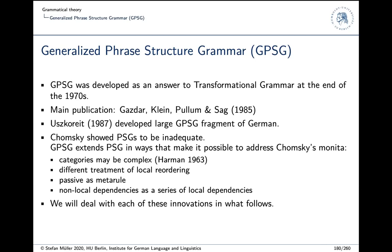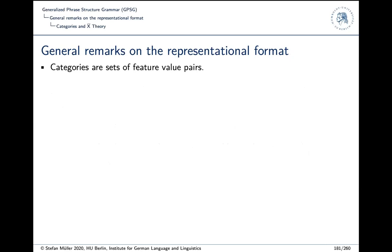You can see from the fact that it took 20 years to arrive at GPSG that it was not simple and not obvious. People did transformational grammar in various ways for a long, long time.